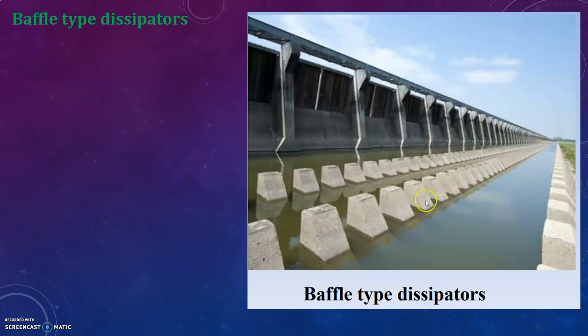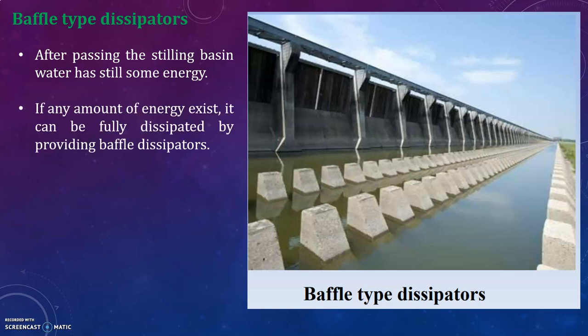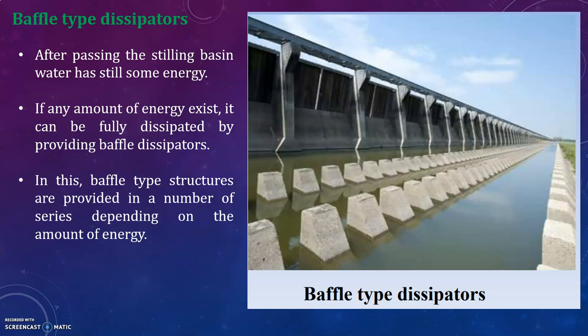After passing the stilling basin, water still has some residual energy. This can be fully dissipated by providing baffle type dissipators, in which baffle structures are provided in a number of series depending on the amount of energy remaining. This concludes our discussion of what is a spillway, its requirements, essentials, and components. In the next lecture, we will discuss the different types of spillways.